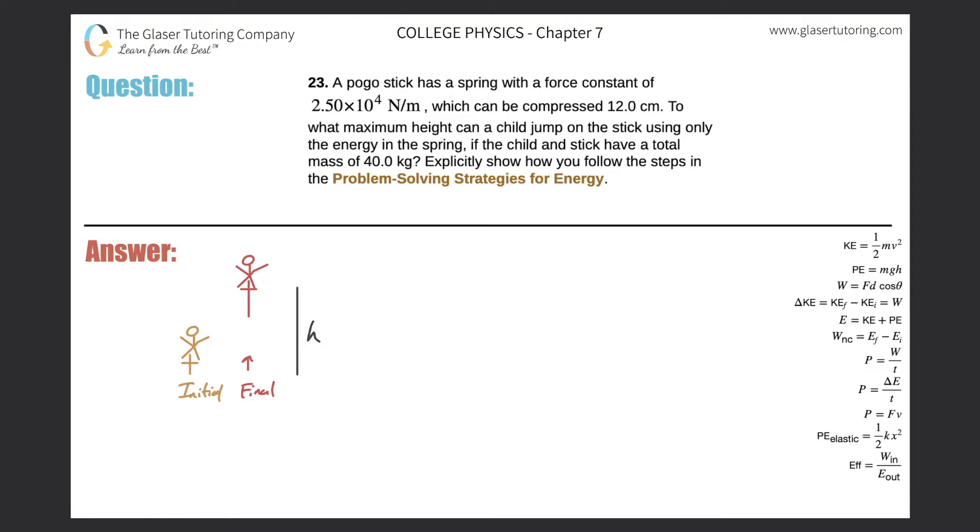Number 23. A pogo stick has a spring with a force constant of 2.5 times 10 to the 4 newtons per meter, which can be compressed 12 centimeters. To what maximum height can a child jump on the stick using only the energy in the spring if the child and stick have a total mass of 40 kilograms?